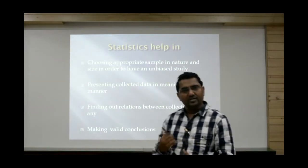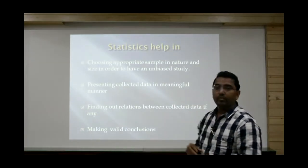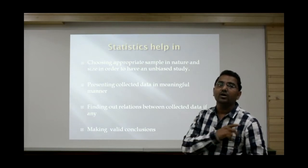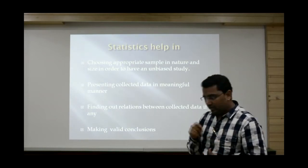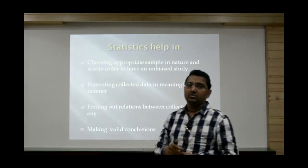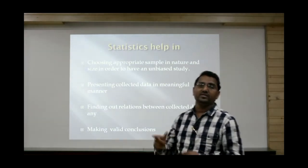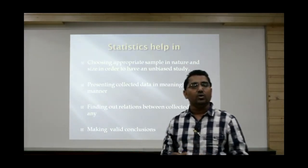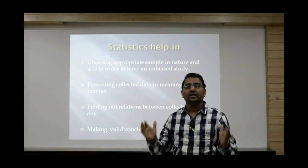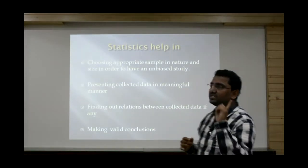If you go to a person and ask him, 'Do you smoke?' — the probable answer is no, even if that person is a smoker. This is what is called a wrong response, and it is very dangerous. So while collecting the data, you have to deal with such wrong responses. Statistics will tell you the scientific techniques to collect the data — that is the first important function.